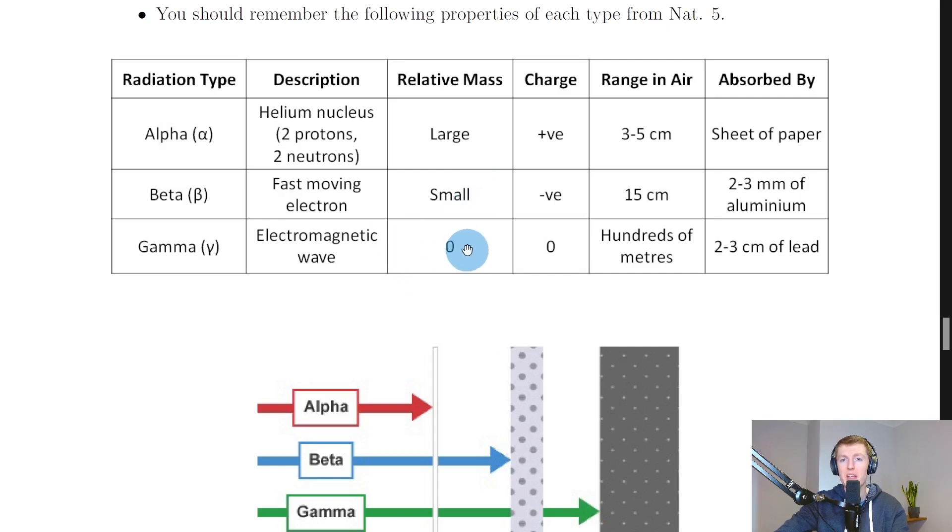And because alpha particles have the largest relative mass, this means they're the most ionizing type of radiation, where ionization remember is the addition or removal of an electron from a neutral atom. And when we compare ionization of these, we're talking about the ability of these types of ionizing radiation to cause ionization, i.e. to strip electrons away from an atom.